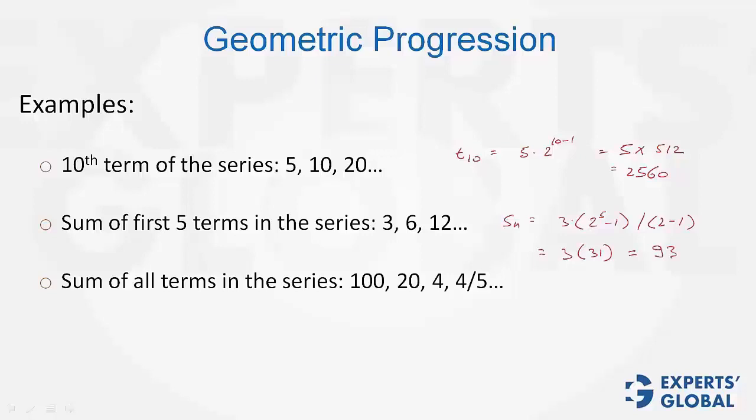This is an infinite series. Sum of all terms is going to be a divided by 1 minus r. a is 100, r is 1 fifth. Practically, this is 100 times 5 fourths. The answer is 125.